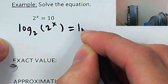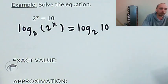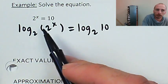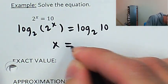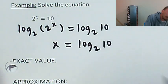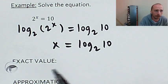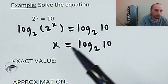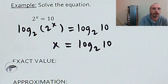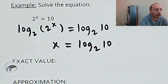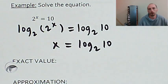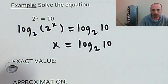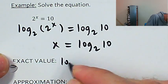So: log base 2 of 2^x equals log base 2 of 10. Using the fundamental identity, log base 2 of 2^x is just x. So this is x equals log base 2 of 10. Maybe you're thinking, I already knew that — I know how to change an equation from exponential to logarithmic form. But in pre-calculus and calculus, it's a better strategy to just do the same thing to both sides: take a log of both sides.